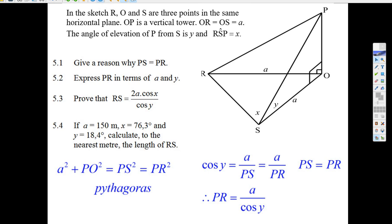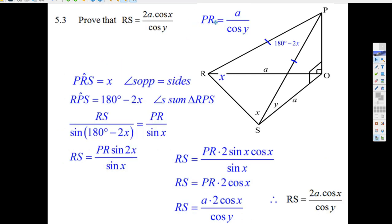And that's what you're going to need for the next question. So you write down PR equals A over cos Y.